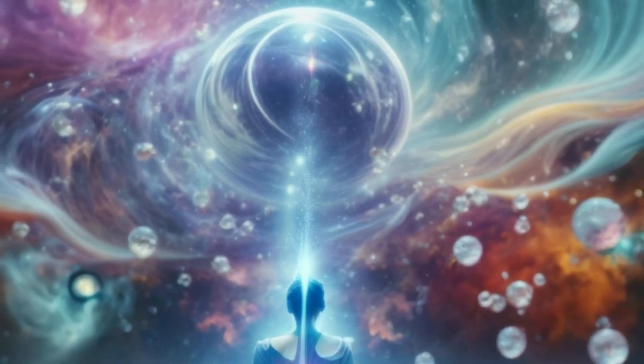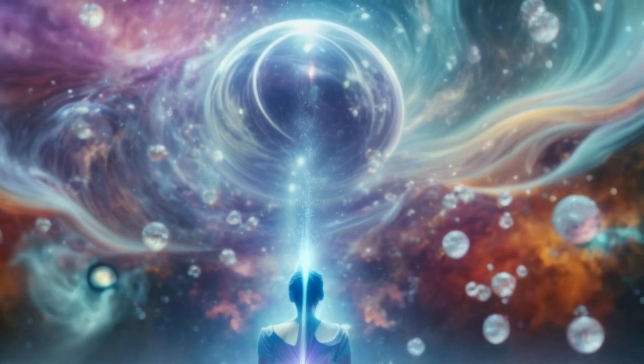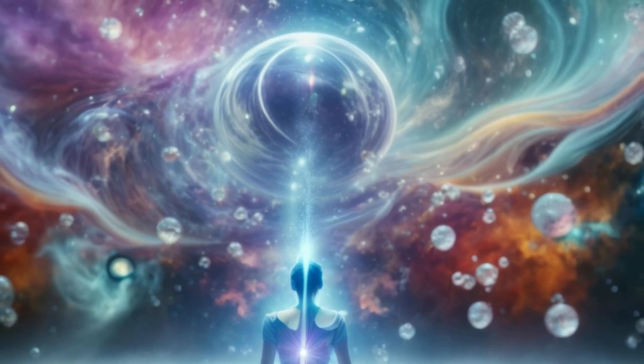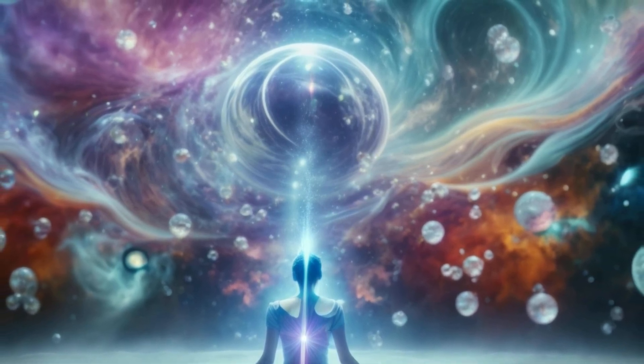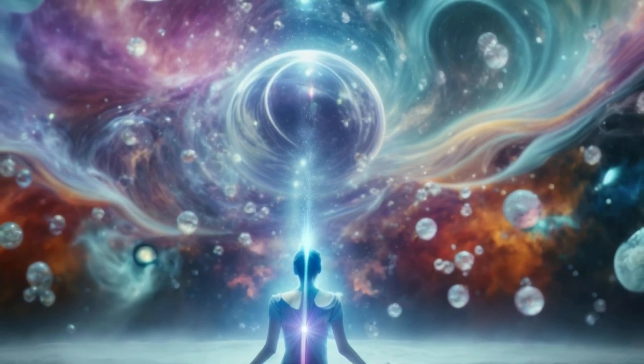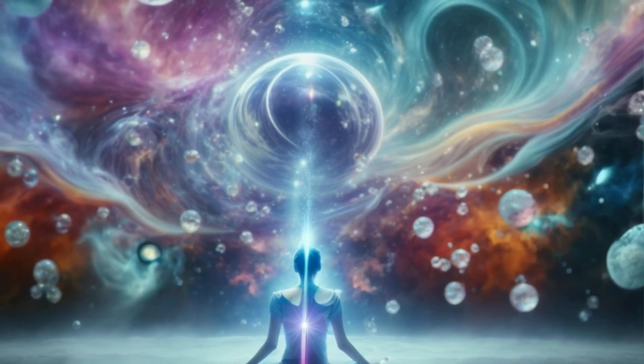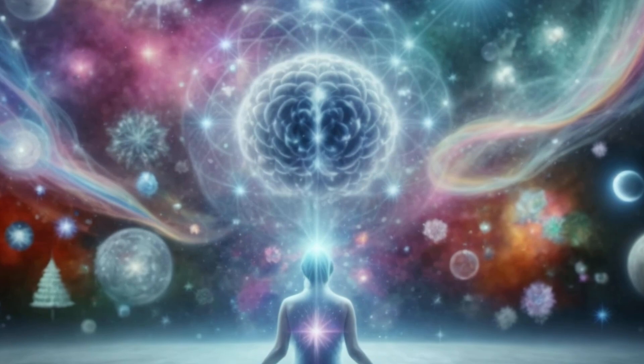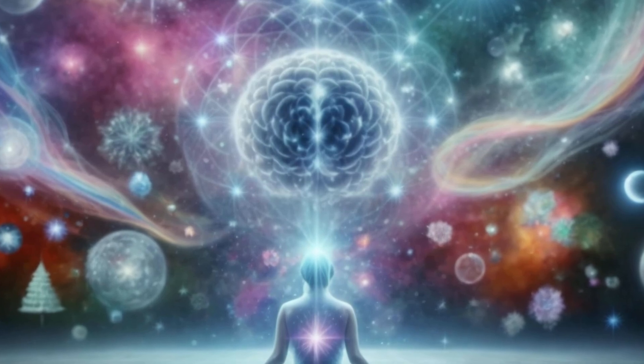The culmination of belief, emotion, and knowing is the practice of living as if the imagined reality is already true. This involves aligning one's thoughts, words, and actions with the desired outcome. It's about making choices and taking steps that resonate with the new reality even before it has fully materialized. For example, if someone imagines a life of abundance, they start expressing gratitude for the abundance they already have, making financial decisions aligned with prosperity, and behaving like someone who experiences abundance in every aspect of life. This alignment creates a powerful vibration that attracts the imagined reality into the physical world.